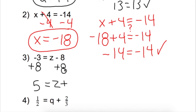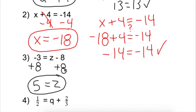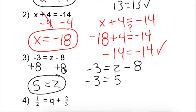We could write plus 0, but since 0 has no value, we leave it out. So our solution is z equals 5. Let's verify: the original equation is negative 3 equals z minus 8. Substituting our solution: negative 3 equals 5 minus 8. Now 5 minus 8 is the same as 5 plus negative 8, which leaves negative 3. Negative 3 equals negative 3 — we checked it and we are good to go.